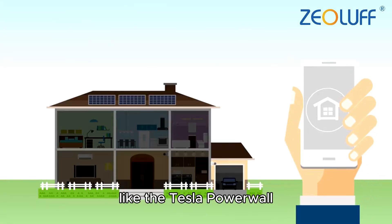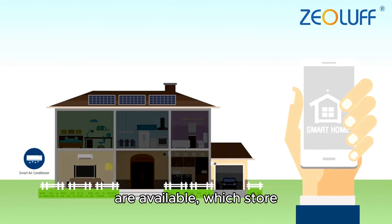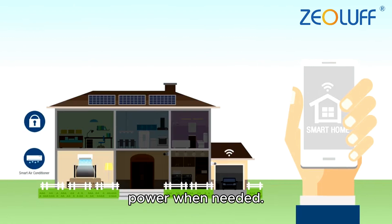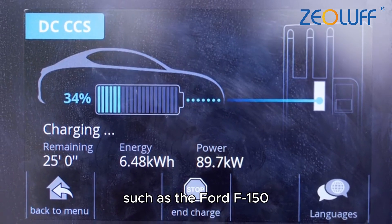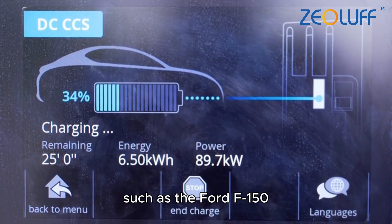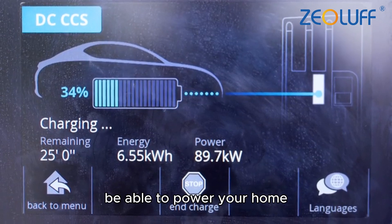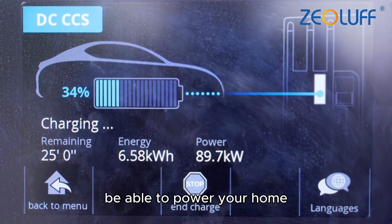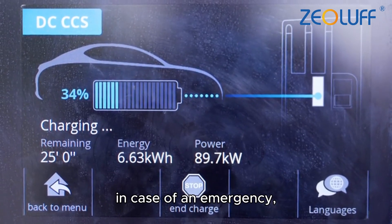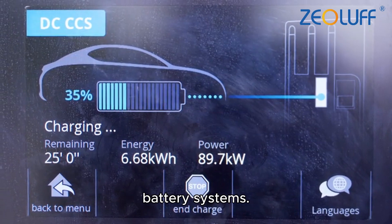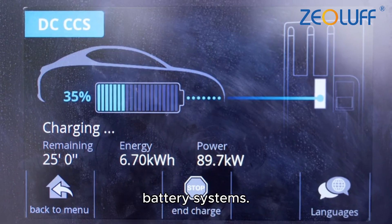Additionally, newer options like the Tesla Powerwall are available, which store solar energy and provide power when needed. Some electric vehicles, such as the Ford F-150 Lightning, even claim to be able to power your home in case of an emergency, thanks to their built-in battery systems.